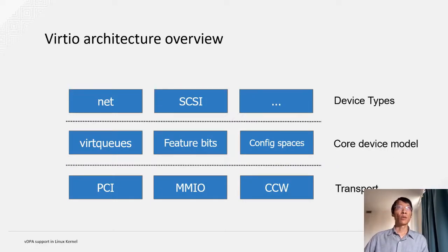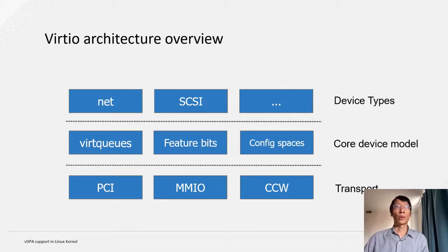Here is the virtio architecture overview. The virtio architecture could be split into three layers. In the upper layers, virtio defines several different types of device — for example, it could be a networking device, SCSI device, block device, etc. In the middle is the core device model, which could be split into the definition of software queues, feature bits, and config space. On the lower layer, it defines several transports which tie the device type to an actual bus. The spec defines PCI transport, MMIO, and CCW transport.